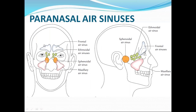The sinuses are located in and around the orbit and the nasal cavity. There are four types of sinuses. They are paired: the frontal air sinus located in the frontal bone, the ethmoidal air sinus located in the ethmoidal bone, the sphenoidal air sinus located in the body of the sphenoid, and the maxillary air sinus located in the maxilla bone. The ethmoidal air sinus contains approximately 3 to 18 ethmoidal air cells, grouped into anterior, middle, and posterior groups. The others are arranged as single sinuses.